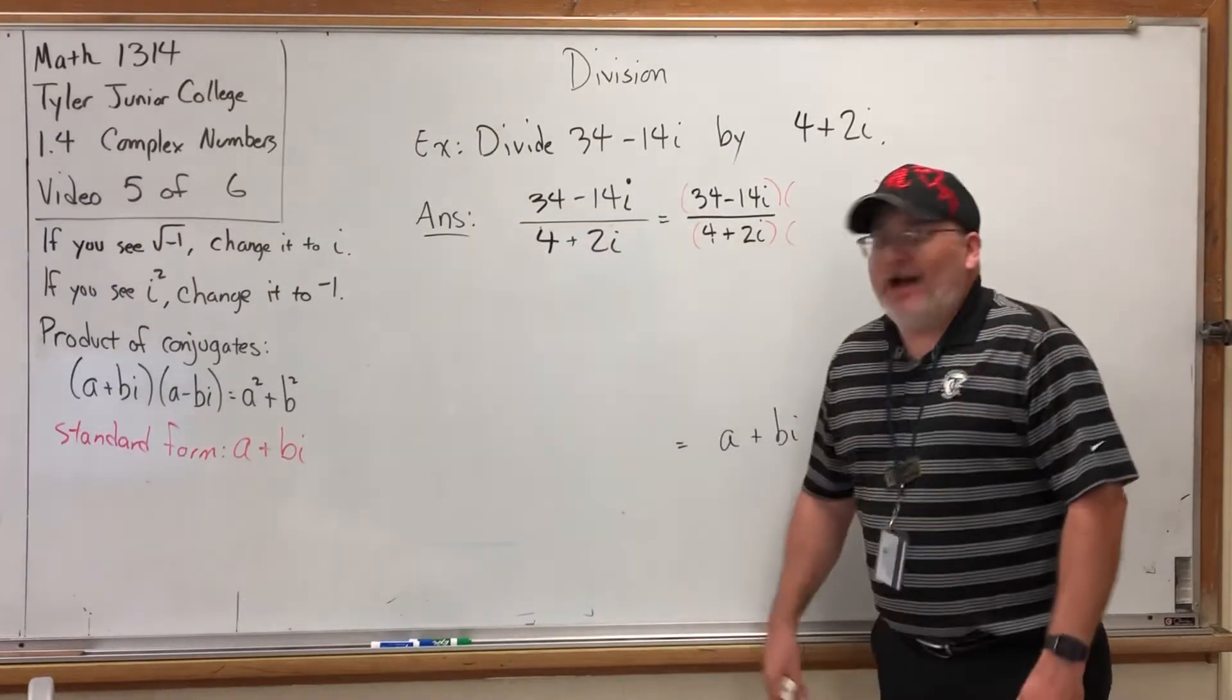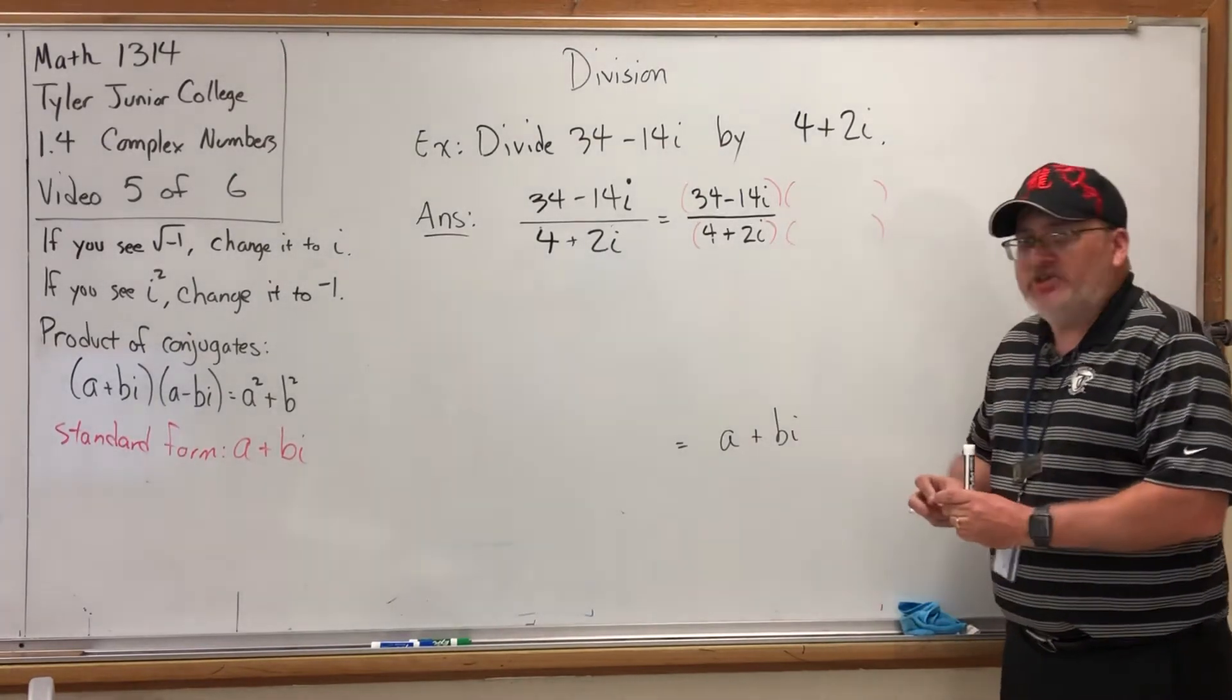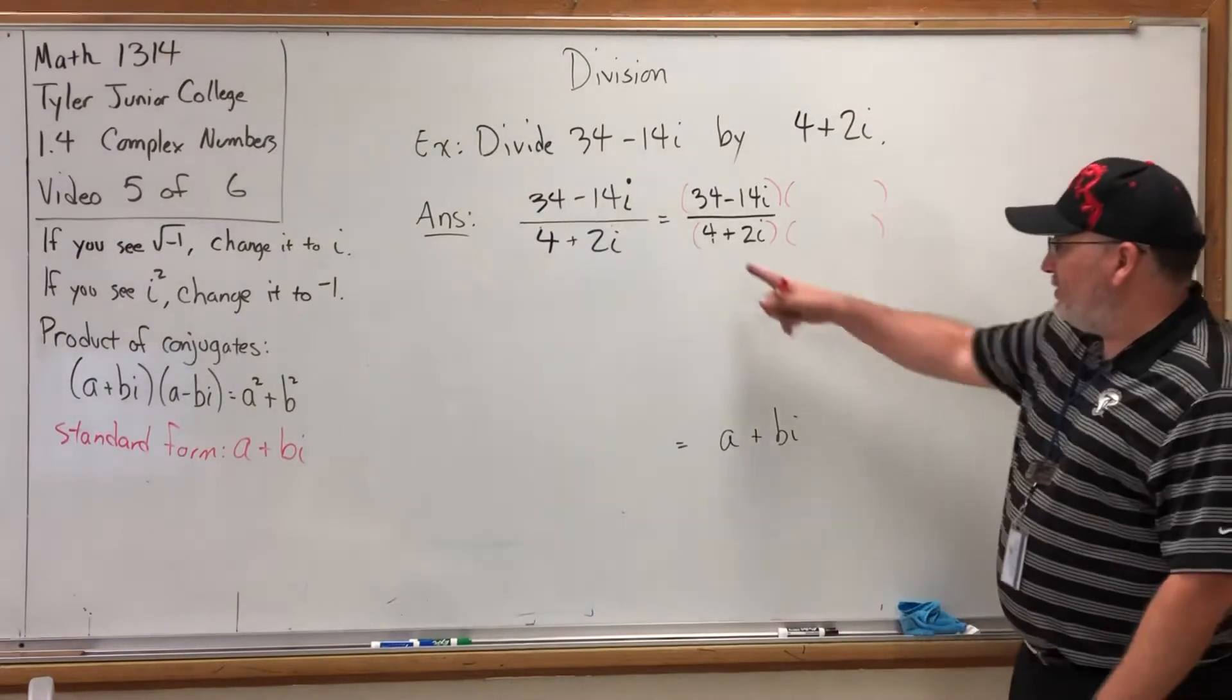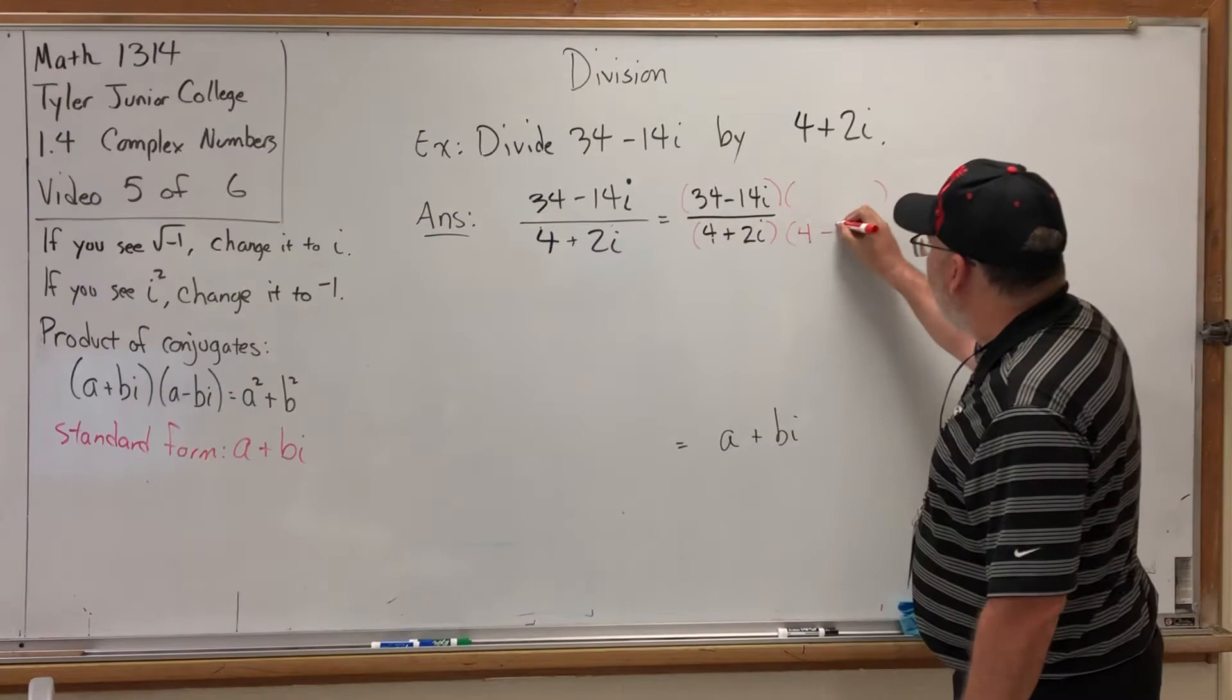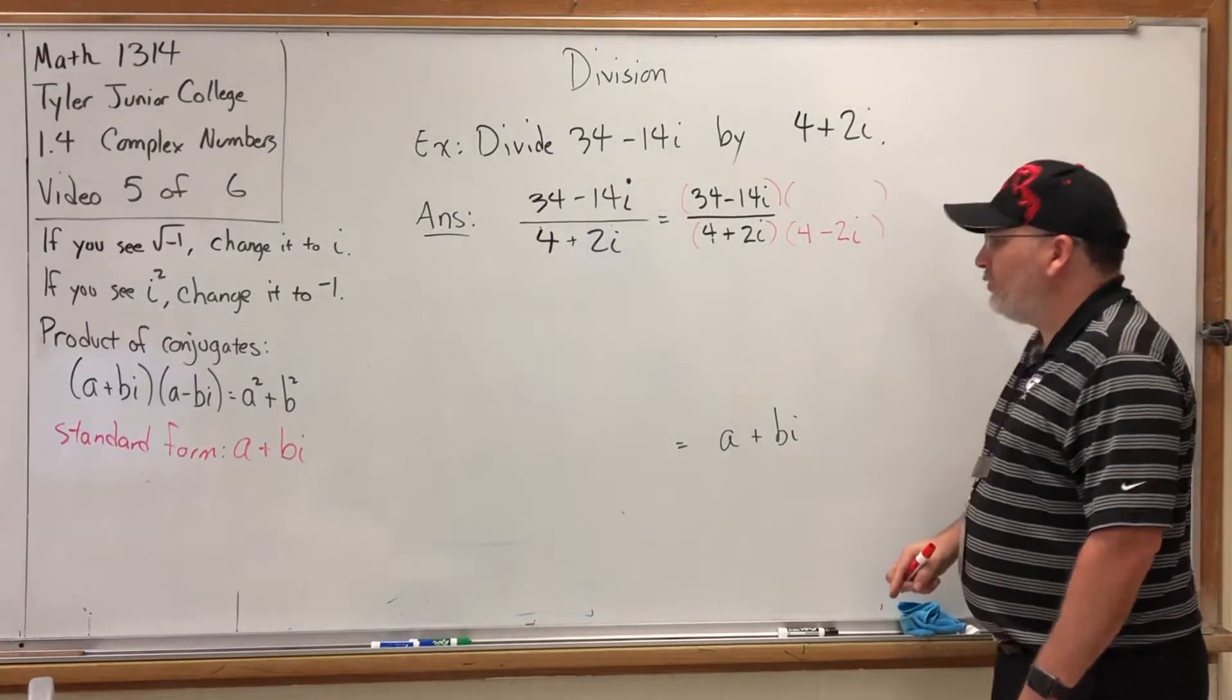I am setting up a product, I want it to be real—have no i's—so why don't we hit both sides with the conjugate? Conjugate of what? Well, it's the denominator we're trying to turn real, so let's multiply by the conjugate of the denominator, which would be 4 - 2i, which would be 4 - 2i, but whatever I multiply on the bottom I have to multiply on the top.